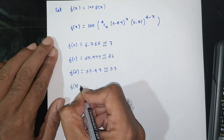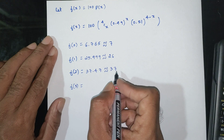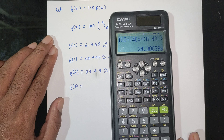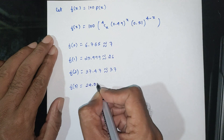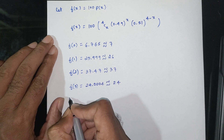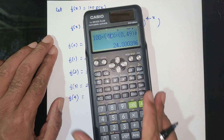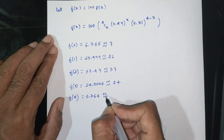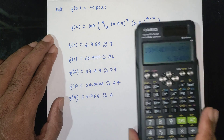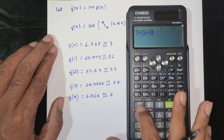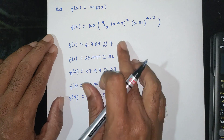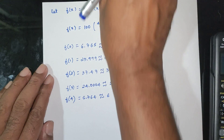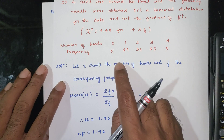Continuing: F(3) ≈ 24, and F(4) ≈ 6. So we have calculated the theoretical frequencies using the binomial distribution. The observed frequencies are 5, 29, 36, 25, 5 and the expected (theoretical) frequencies are 7, 26, 37, 24, 6.